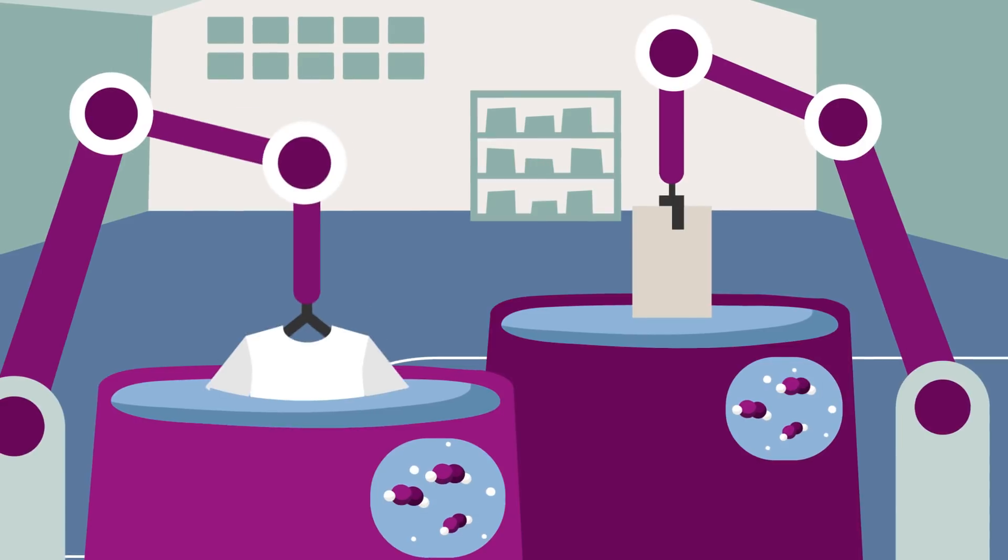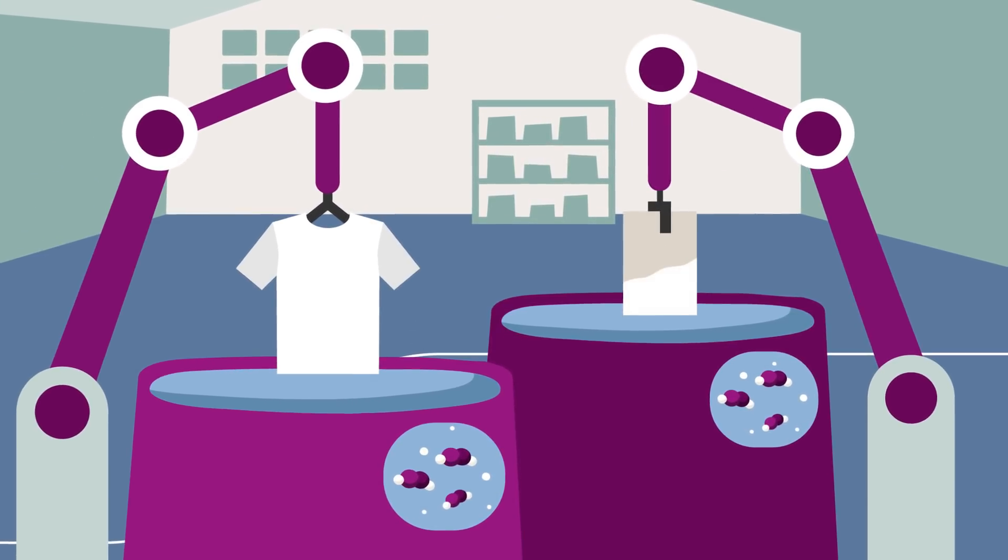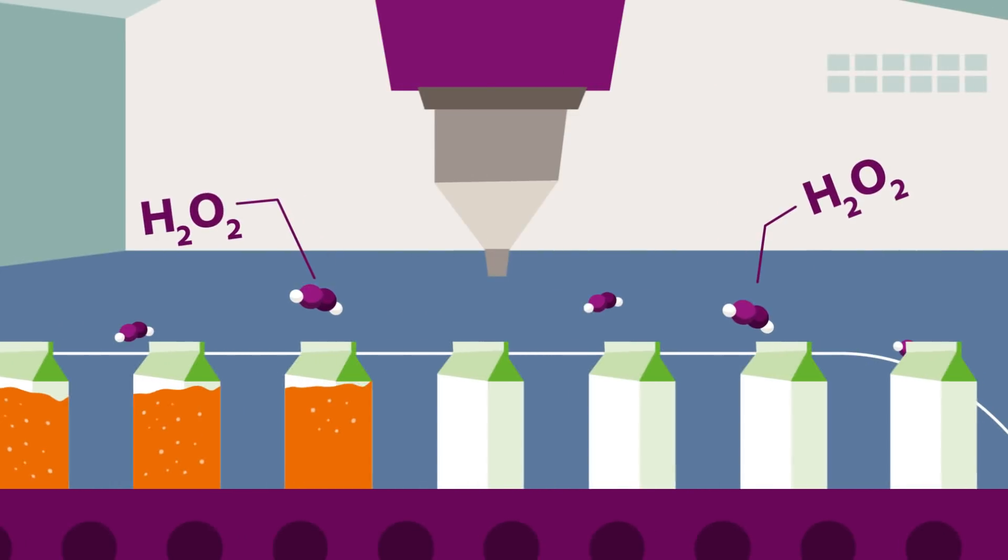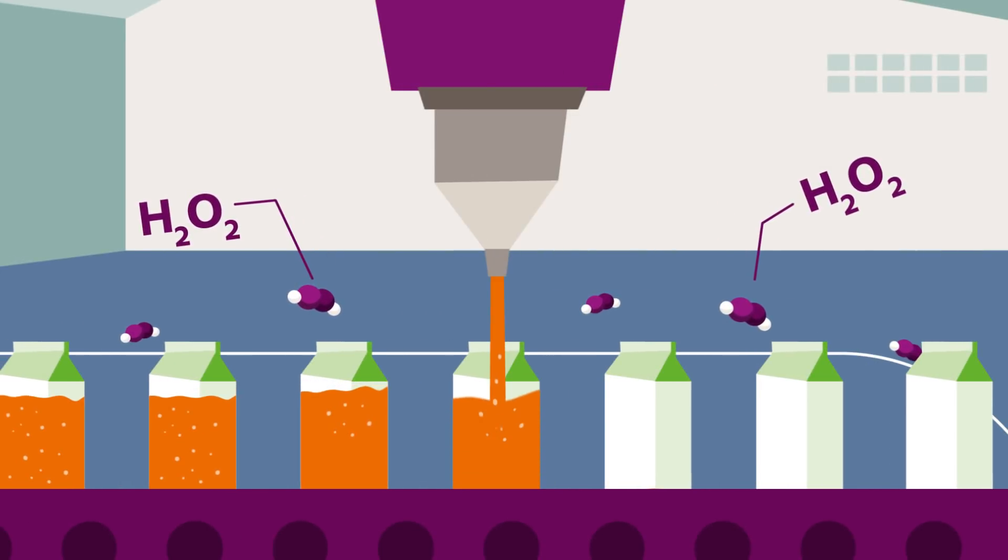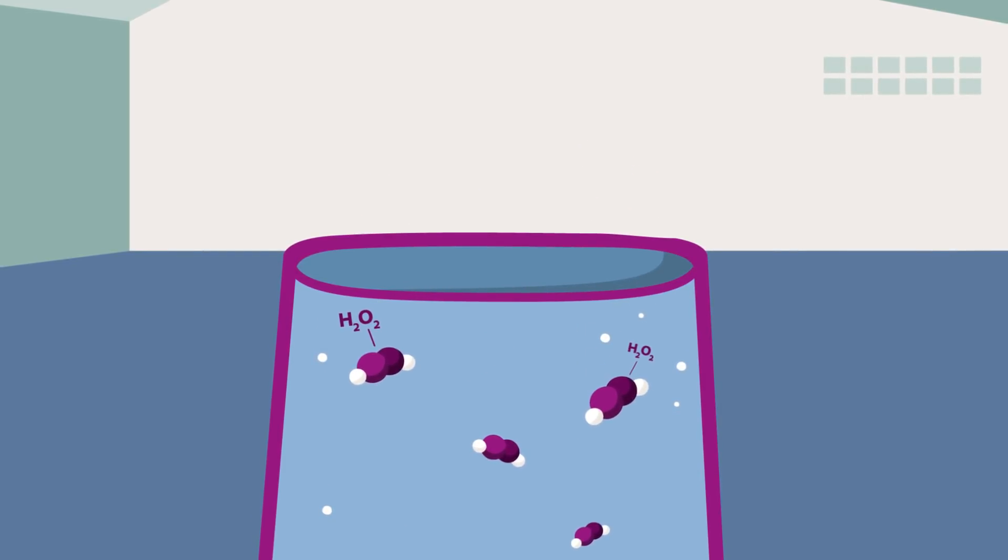as a bleaching agent in the textile industry, or to bleach pulp in the manufacture of paper, as a disinfectant in the food and beverage sector, or in water treatment. Here, hydrogen peroxide can replace environmentally harmful chlorine.